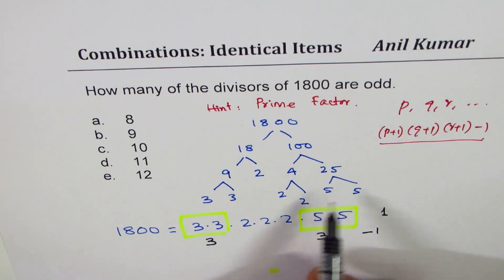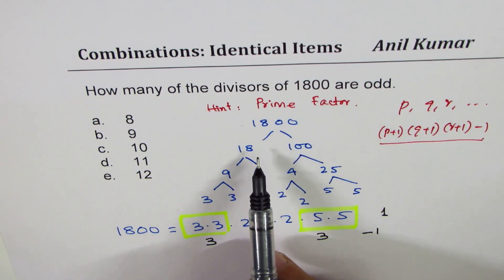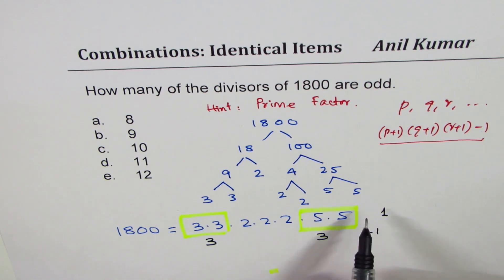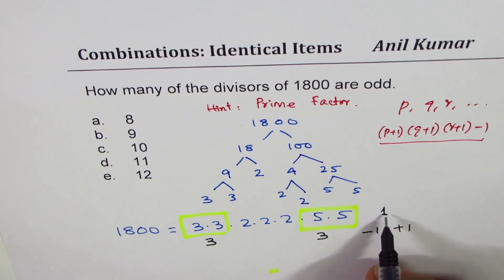Also 1 is a factor, right? 1 is not a prime number, therefore you will never see it in prime factorization. 1 has only one factor. Prime factors have 2, and therefore 1 is not treated as a prime factor. So we'll add 1 because 1 is a factor.